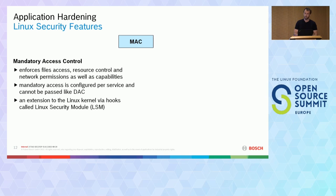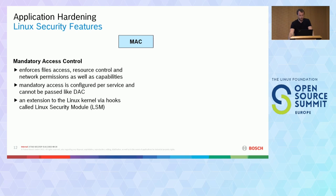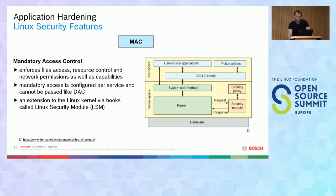We have mandatory access control (MAC) as a counterpart to discretionary access control. MAC cannot be passed to other subjects — it is configured per service and enforces file access, resource control, and capabilities. It is provided via an extension to the Linux kernel called the Linux Security Module (LSM), enforced via hooks. You can set a security policy via SE Linux, AppArmor profiles, or others.